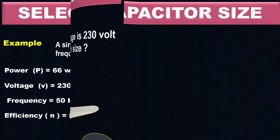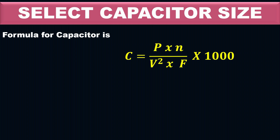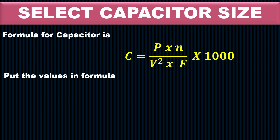The formula for capacitance is: C equals power multiplied by efficiency multiplied by 1000, divided by voltage squared multiplied by frequency. Putting in the values: 66 multiplied by 80 multiplied by 1000, divided by 230 squared multiplied by 50.